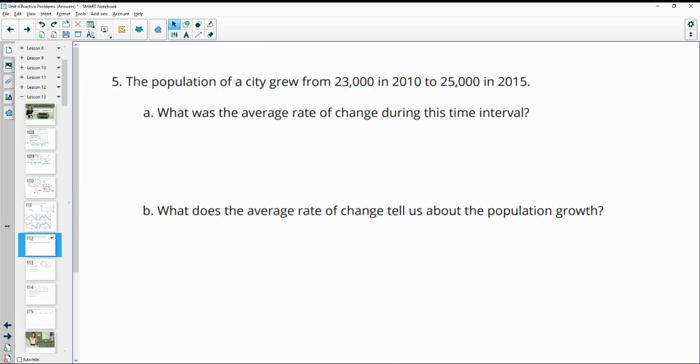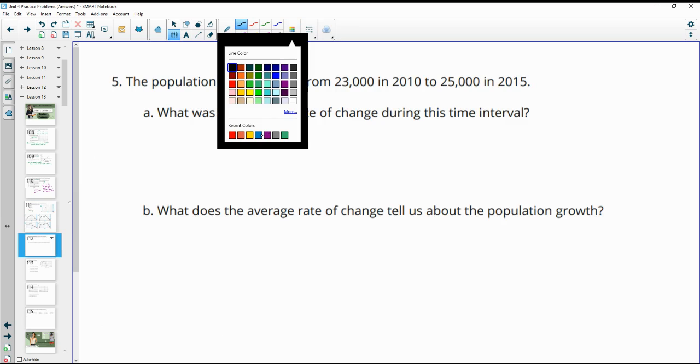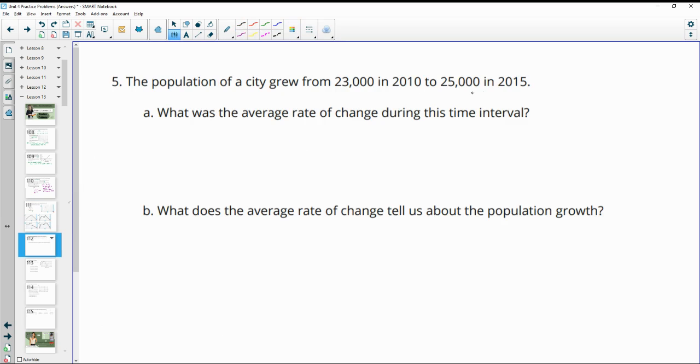Number five, the population of a city grew from 23,000 in 2010 to 25,000 in 2015. What's the average rate of change during this time period? So you want to look at the change in the population, which is it goes up 2,000. So from 23,000 to 25,000 is up 2,000. And then the interval for the time period is that that happens in two years.